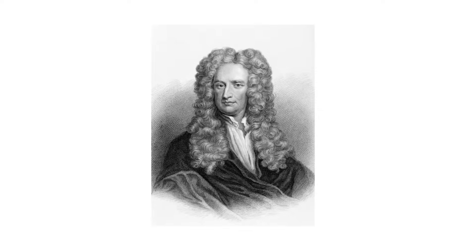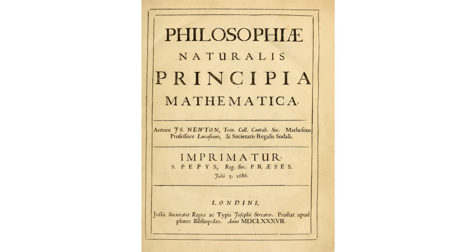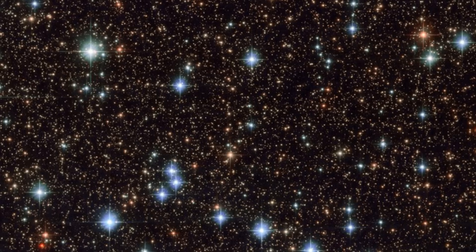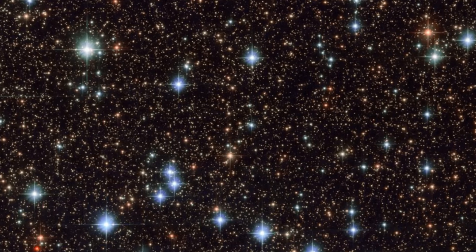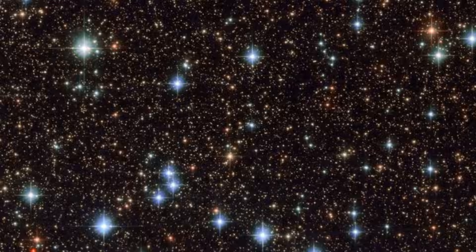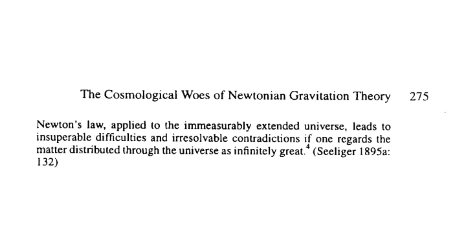There was one problem with Newtonian gravitation that was first identified more than 200 years after Newton's Principia Mathematica, arising when trying to use Newton's laws for an infinite, homogeneous and isotropic universe with constant matter density. Hugo Seeliger in 1894, and Karl Neumann 20 years before, wrote that Newton's laws applied to the immeasurably extended universe lead to difficulties and irresolvable contradictions if one regards the matter distributed through the universe as infinitely great.